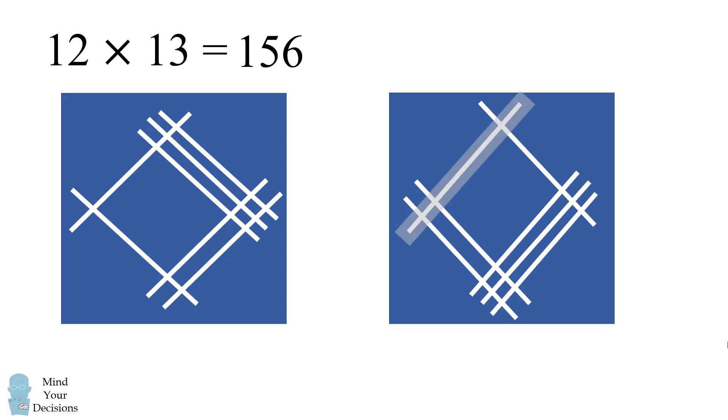Here we have one line followed by three lines. This will be the number 13. In the other direction we have two lines followed by one line. This will be the number 21. Now we can count the intersections to get the answer to 13 times 21.